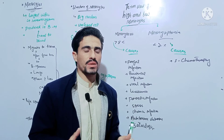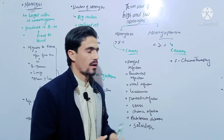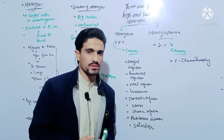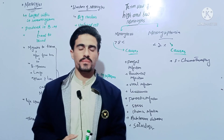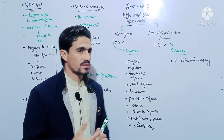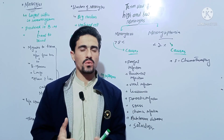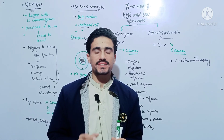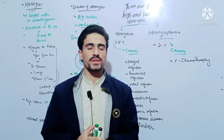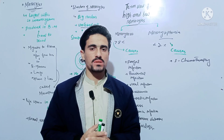Chemotherapy is basically a combination of different drugs which are used for cancerous conditions. So this was all about monocytes — its normal range along with its structure and the terms used for high and low monocytes. In the next lecture we will discuss other agranulocytes like lymphocytes in detail. Thank you, see you next time.